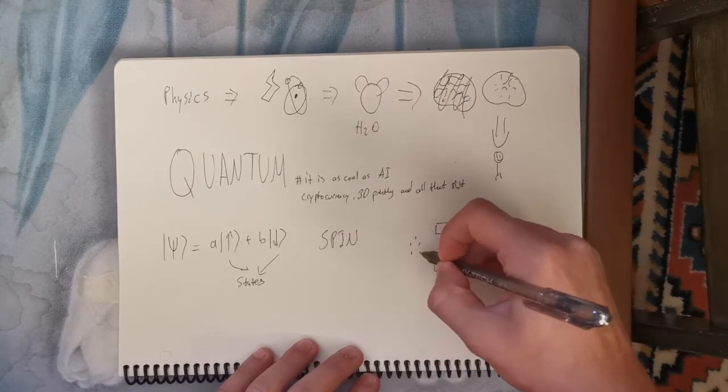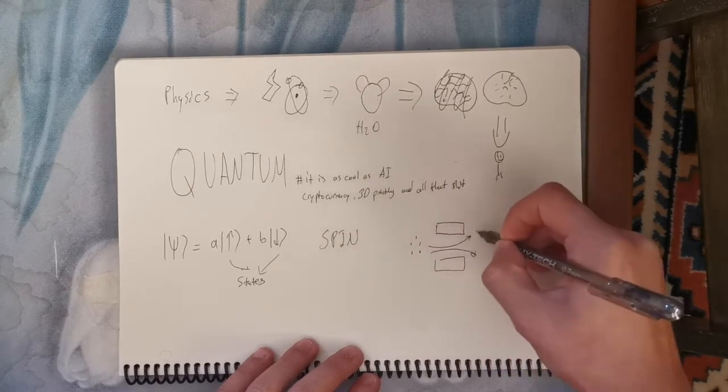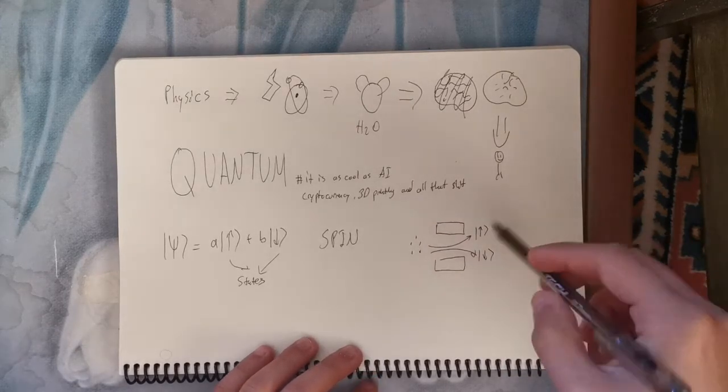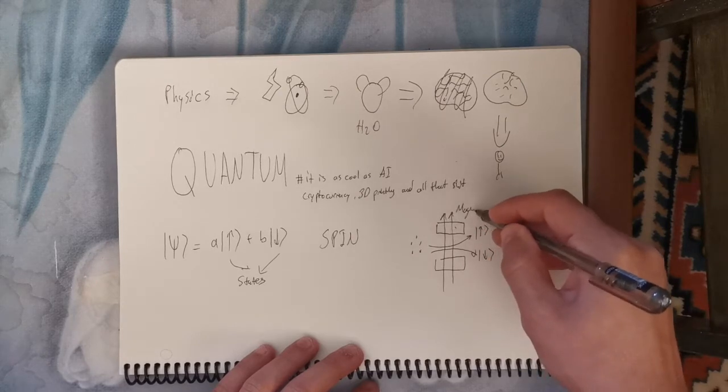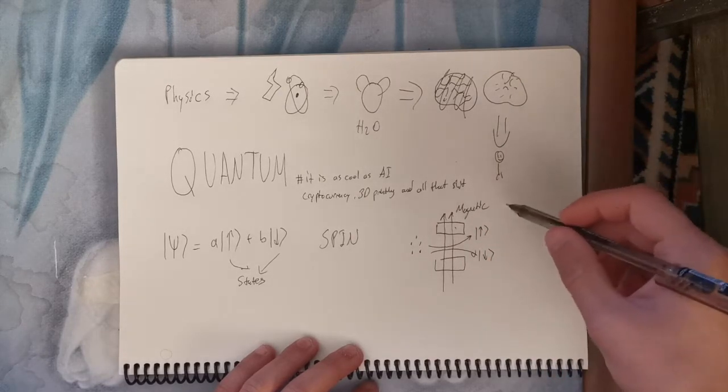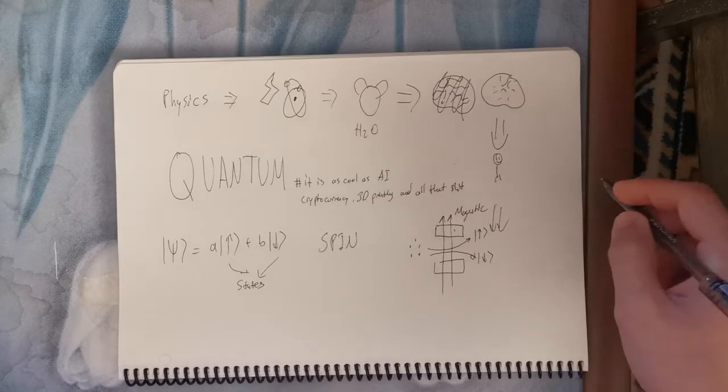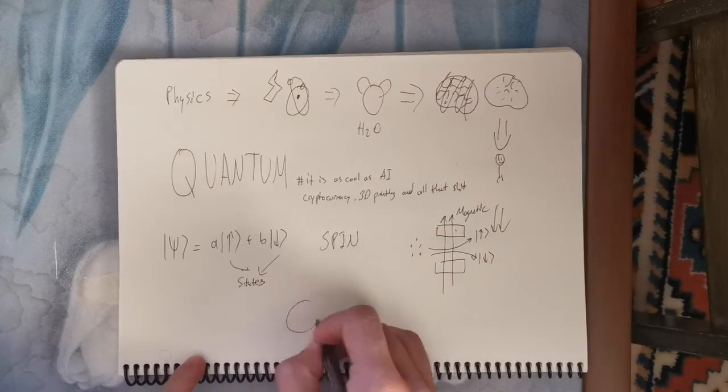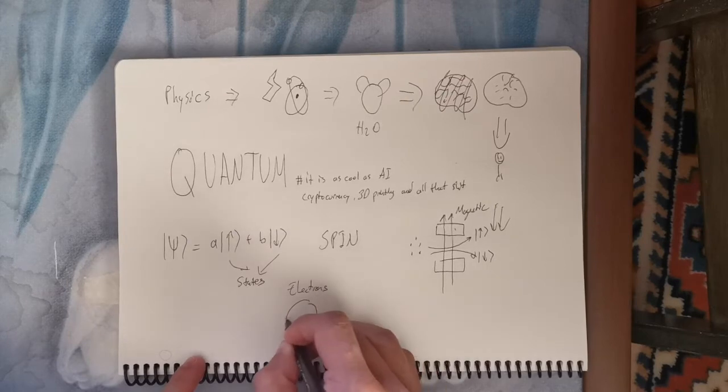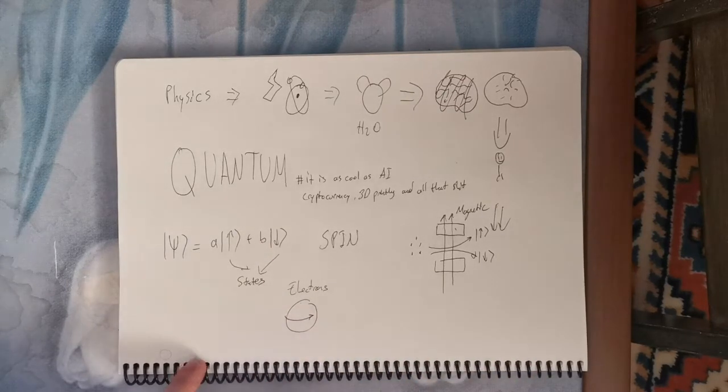To understand spin, a guy took a bunch of electrons and sent them through a magnetic field. And half of the electrons went up towards the magnetic field, and half of them went down the opposite way. So our guy said, oh, the electrons spin, which creates magnetic field, just like the current does, and acts like a magnet.